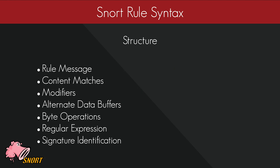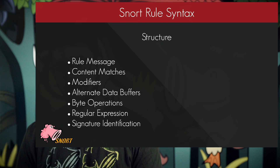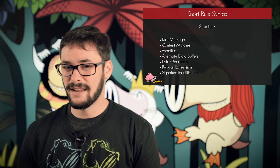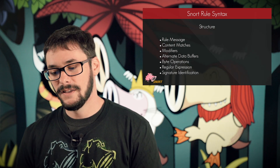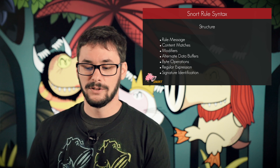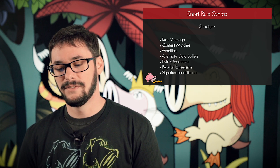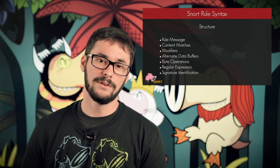So let's move on to the meat of a Snort rule. That is called the structure, and those include the rule message, content match, content match modifiers, the alternative data buffers, byte operations, regular expressions, and signature identification. Your rule may contain only a few of these, or it may contain only the required options. The only required option for Snort to process the rule is the signature identification option, also known as the SID.